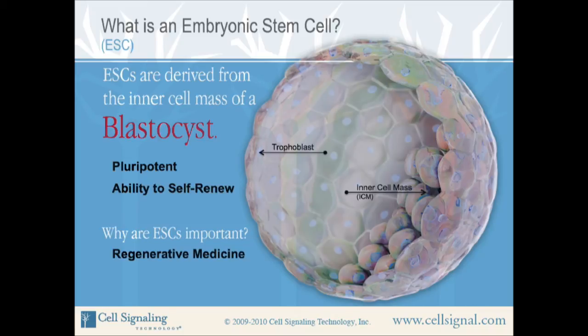Embryonic stem cells are also important for basic science research. ESCs are studied in basic research to increase our understanding of early-stage human development. The study of ESC differentiation along specific lineage pathways may increase our understanding of disease states and progression.